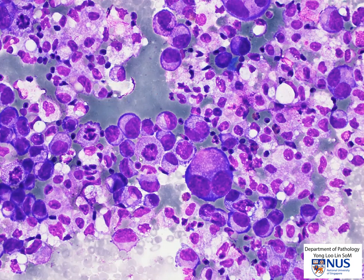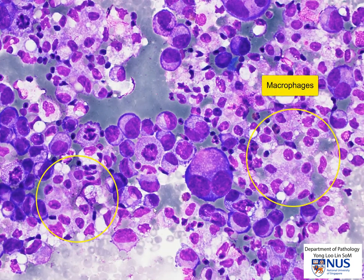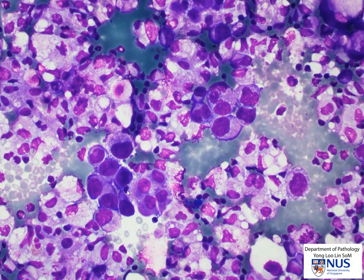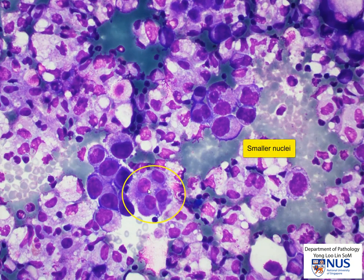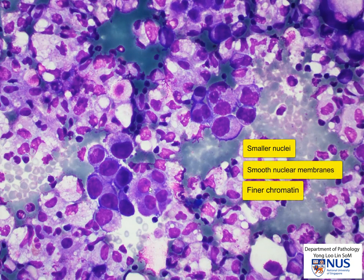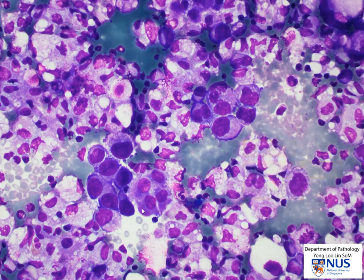We can compare these cells with other cells with much smaller nuclei, and these cells which are likely to be macrophages. Moving to a different area, we again see atypical cells with large eccentric irregular nuclei. These other cells have much smaller nuclei, smoother nuclear membranes, and finer chromatin, which would be more readily appreciable in the alcohol-fixed smears. The cytoplasm is relatively homogeneous — these are mesothelial cells.